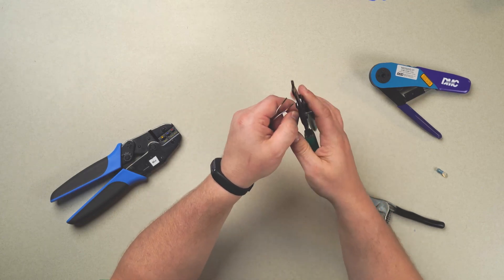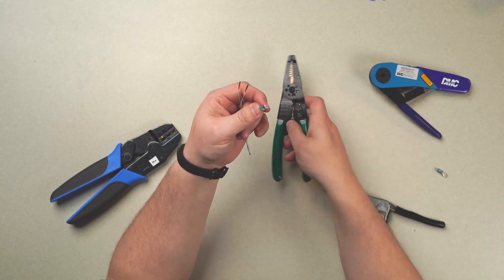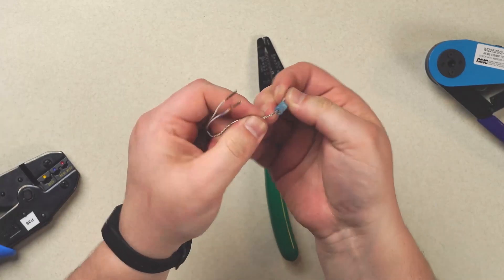And we crimp right in the center, center mass. The reason this is not desirable is, as you can see, it really tears up the ring terminal and it doesn't always give us the most firm fit.